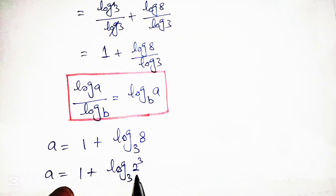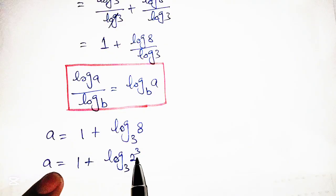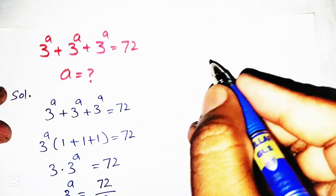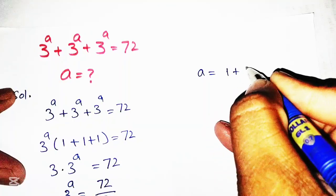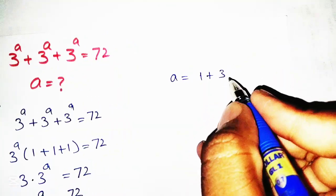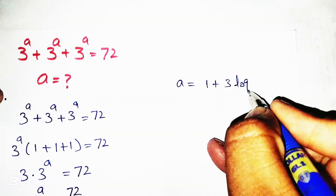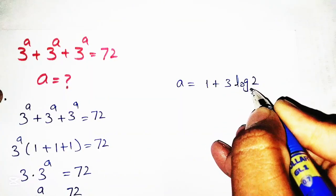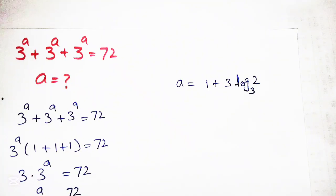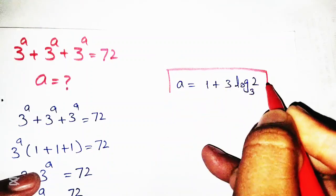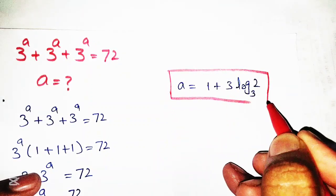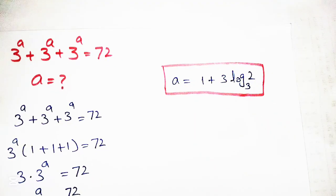The power 3 of the exponent will multiply with the log, and we write the final answer as a is equal to 1 plus 3 times log base 3 of 2. This is the final answer of the given equation.